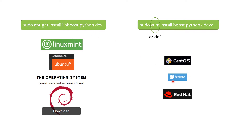If you use Fedora or other Red Hat-based Linux distributions such as CentOS, you need to run 'sudo yum install boost-python3-devel'. Don't forget the '3' here to specify the right Python version, which is not necessary in the case of Ubuntu.